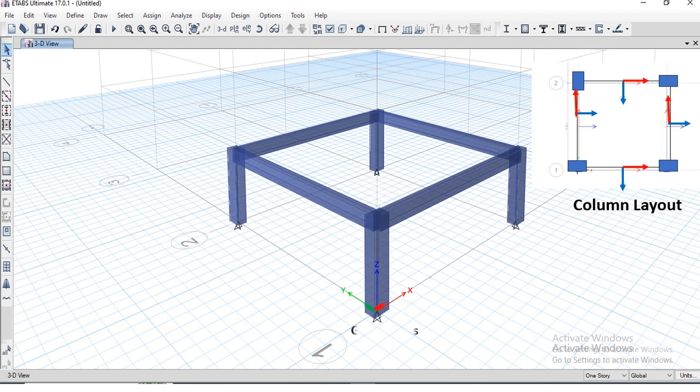Let's look at the column layout plan first. Here we have rectangular columns. Clearly we can see orientation of one column is reversed to the other three, and that is column A2 on top left of your screen.